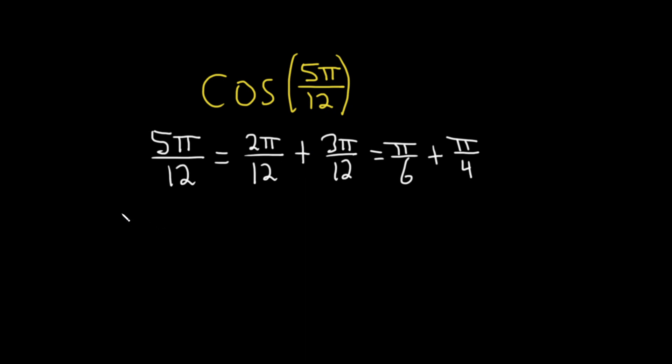Okay, so now recall the identity says if you have the cosine of A plus B. And the trick to memorize this identity is as follows. It's always cosine cosine. So cosine A, cosine B.